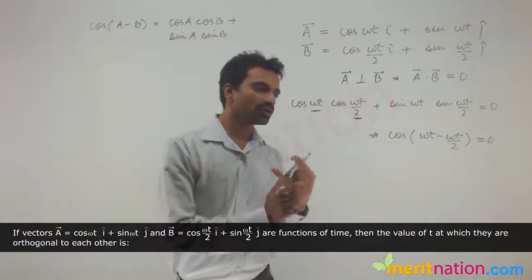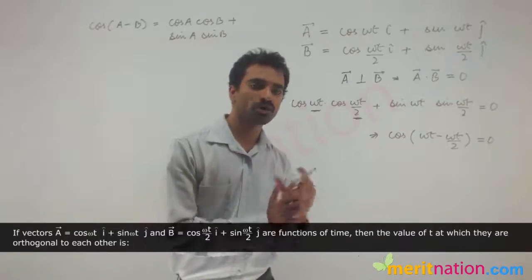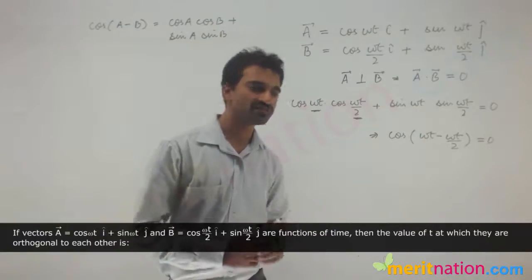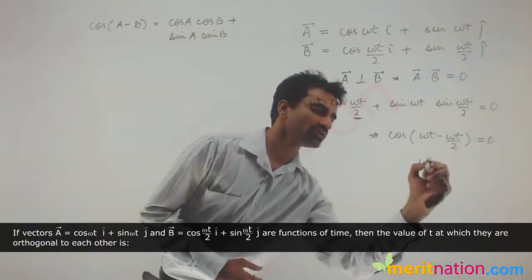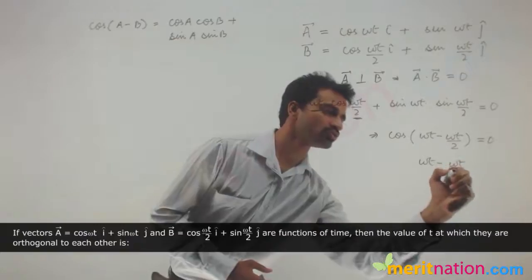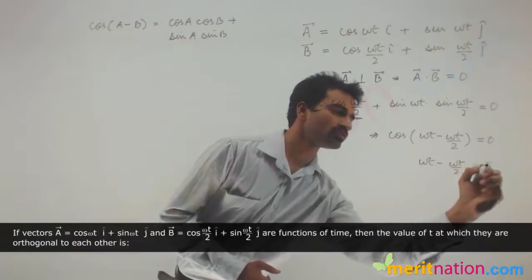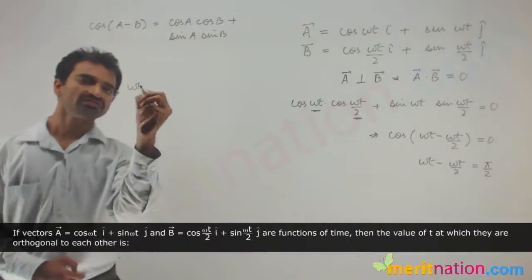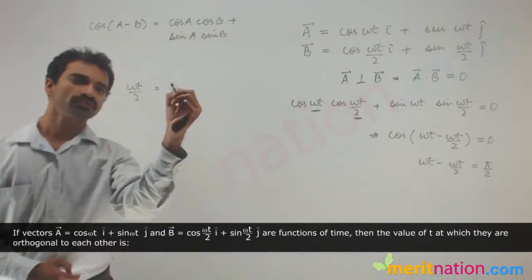Now for cos θ to be equal to 0, the angle θ should be equal to 90 degrees, and therefore my ωt minus ωt/2 should be equal to π/2, or can I say ωt/2 should be equal to π/2.